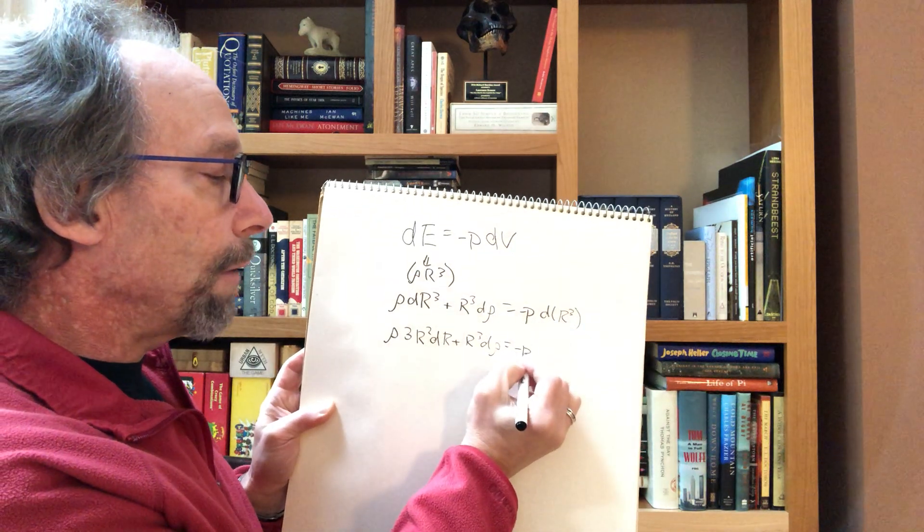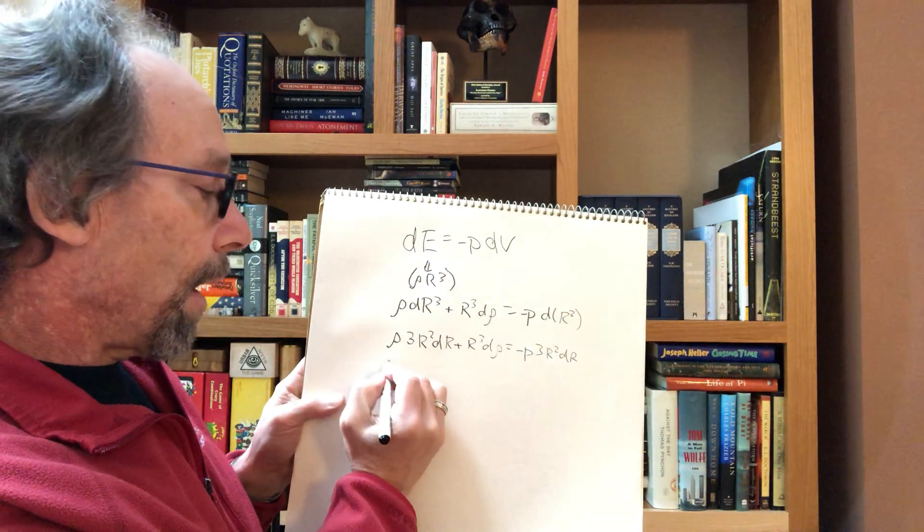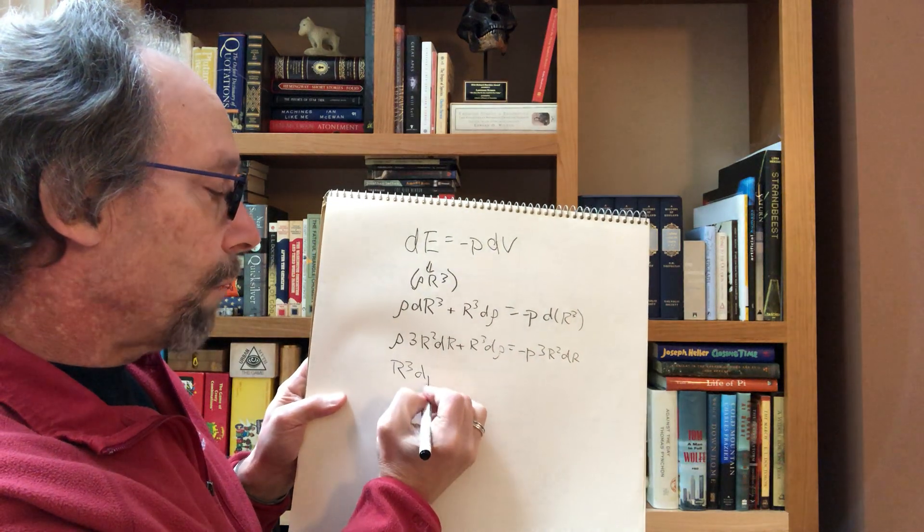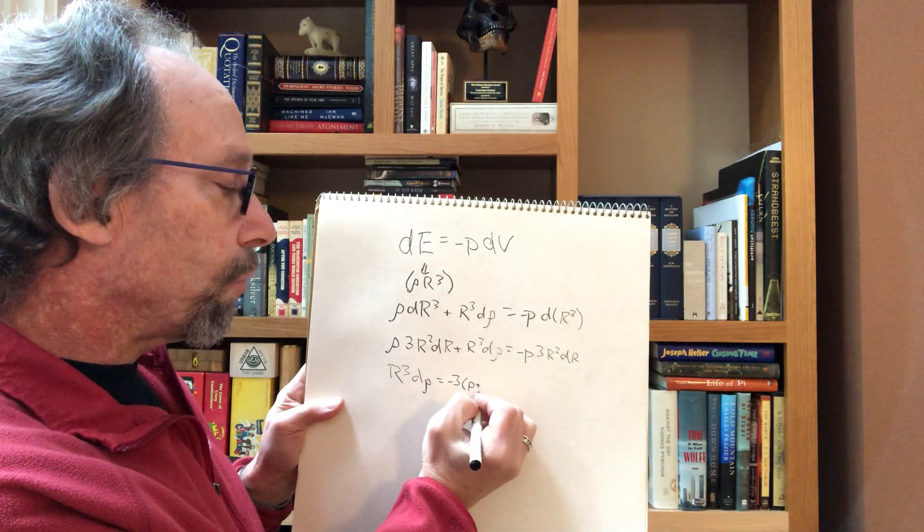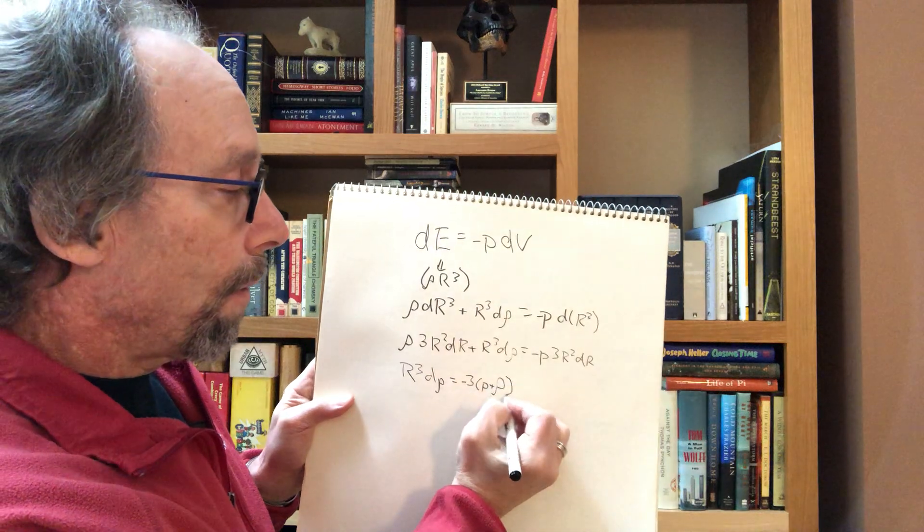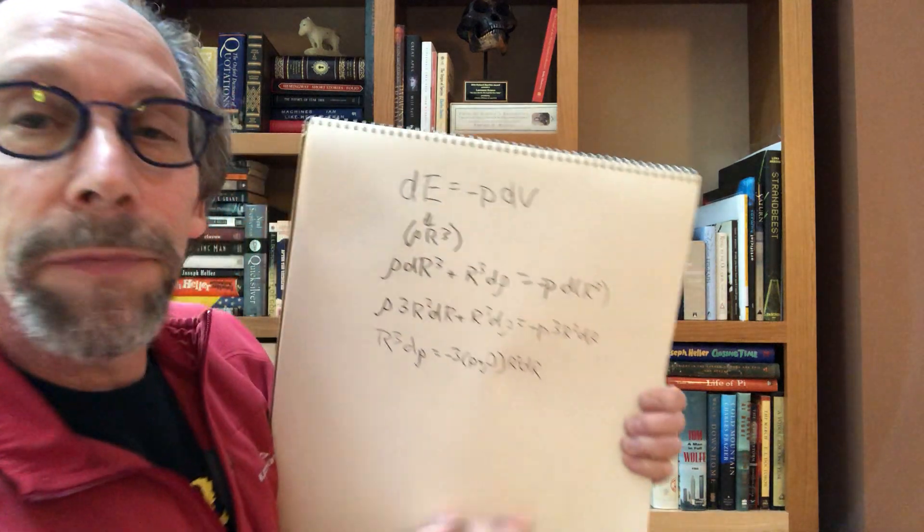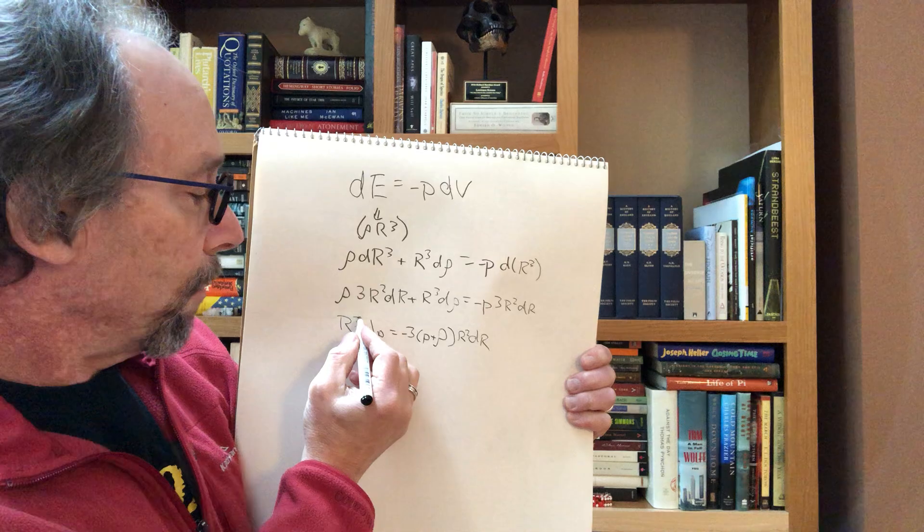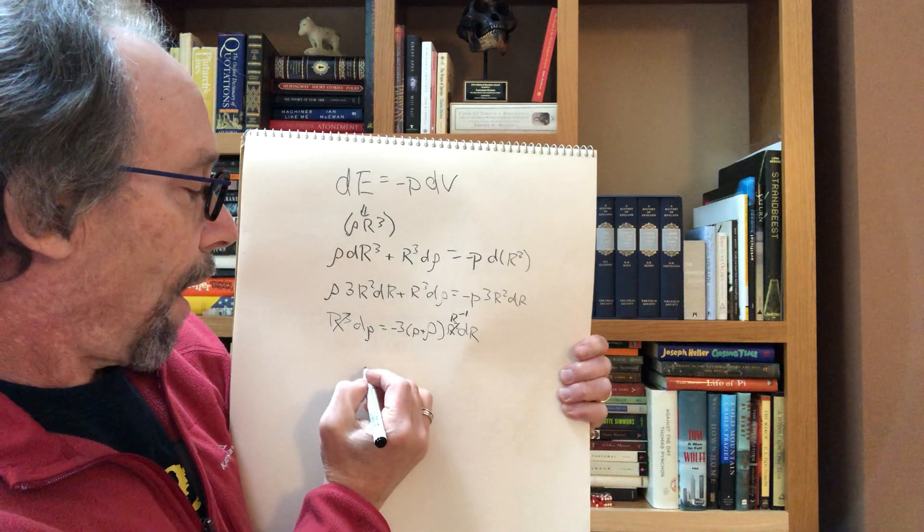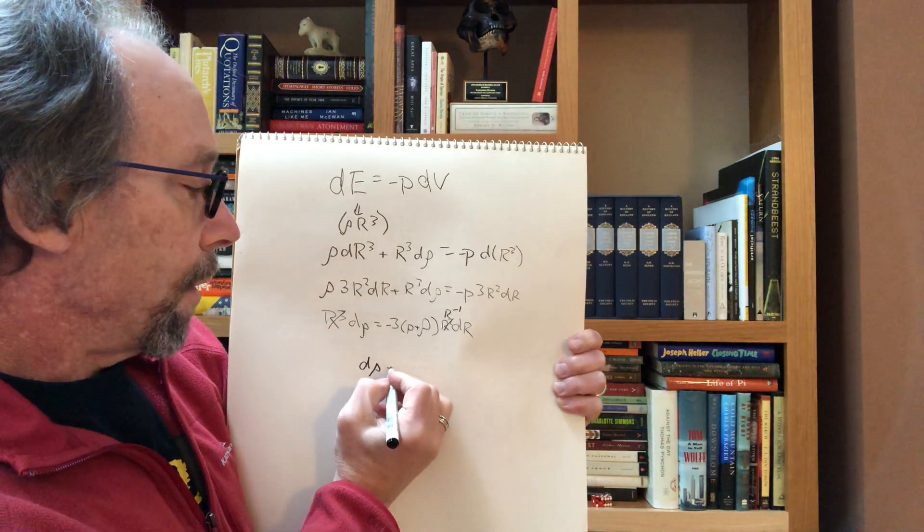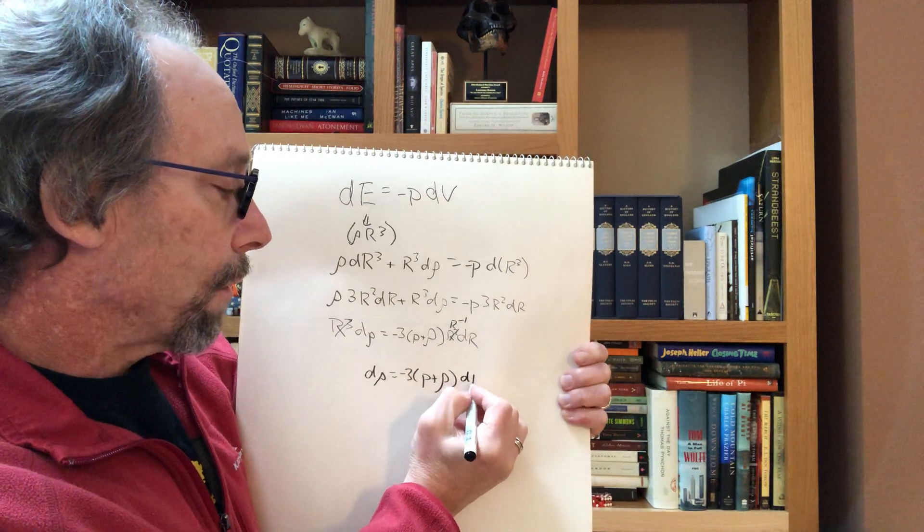equals minus p times 3r squared dr. Well, I can bring this over to this side, and I get r cubed d rho is equal to minus 3p plus rho times r squared dr. Let me now finally divide both sides by r cubed and rewrite this as d rho equals minus 3p plus rho dr over r.